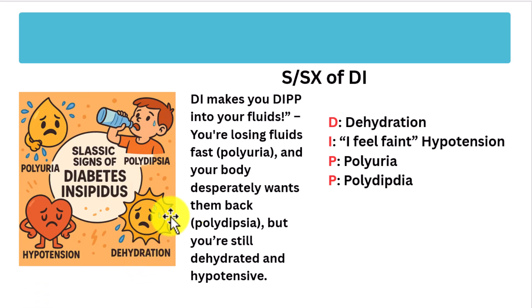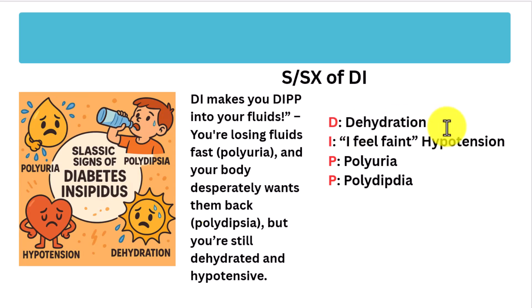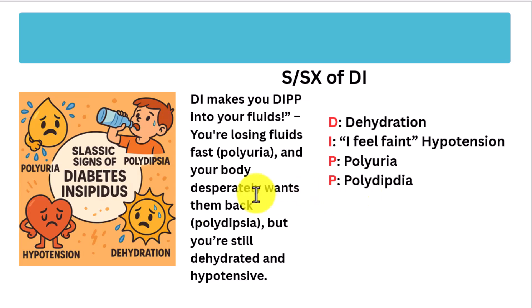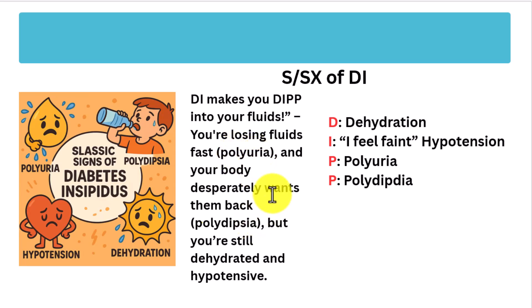Remember the mnemonic DIP for diabetes insipidus: D for dehydration, I for 'I feel faint' meaning hypotension, and P for polyuria — and the other P for polydipsia. Just remember: DI makes you dip into your fluids — you're losing fluids fast, which is polyuria, and your body desperately wants them back, which is polydipsia. But you're still too dehydrated and hypotensive.